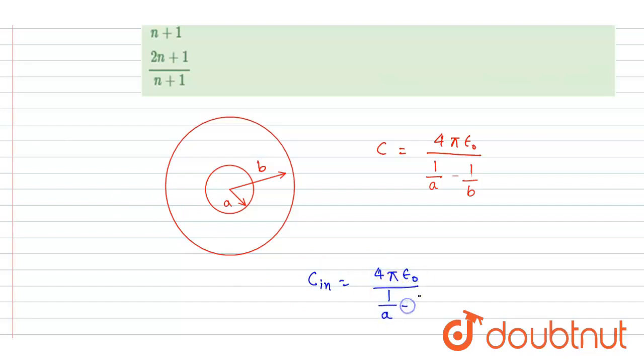Now when it is enclosed by an earthed capacitor of the radius b, then the capacitance will change. Capacitance will be this, right? So these two are the capacitance.